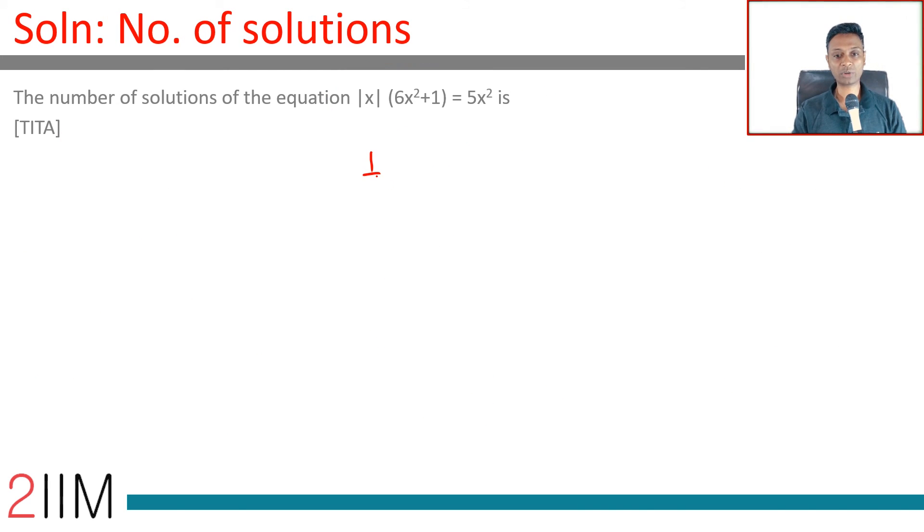So x = 1/3, -1/3, 1/2, -1/2, and 0. Five possible values exist.